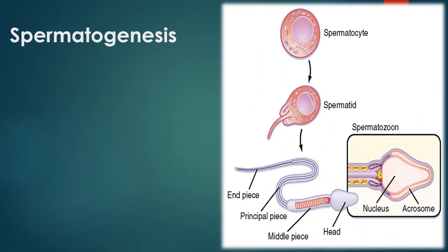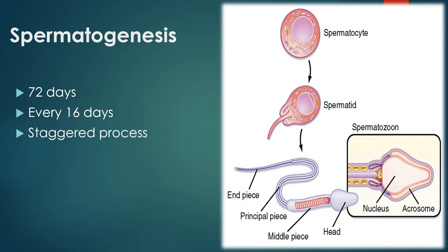The process of spermatogenesis usually takes about 72 days, and cohorts of adjacent spermatogonia enter the process every 16 days, so that the process is staggered along the seminiferous tubule. There are about 500 seminiferous tubules in one testis, approximately 400 meters in total length. Spermatozoa are continually being generated at many sites within the testes at any given time — that's how the production of millions of sperm is maintained.